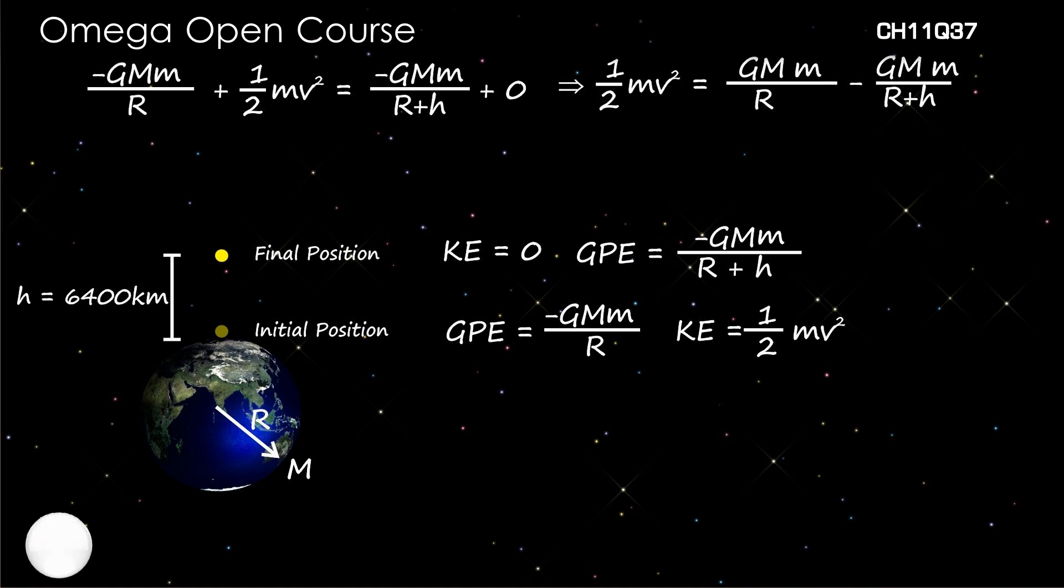But h is equal to R. Therefore, ½mv² equals GMm/R - GMm/2R which equals GMm/2R. This implies v is equal to √(GM/R).